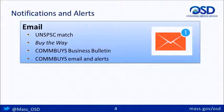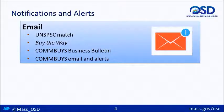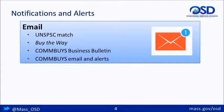ComBuys does provide a number of ways to search for bids. However, perhaps the easiest way to find out about opportunities is through notifications and alerts. Several communications are delivered via email. When commodity codes — we use United Nations Standard Products and Services Codes — included in a bid solicitation match commodity codes included in your ComBuys business account, an email is sent to the email address specified in your account. For this reason, as a best practice, set up your ComBuys account to include all possible commodity codes that may apply to your business.